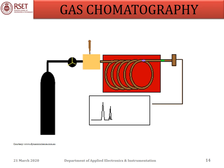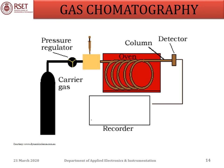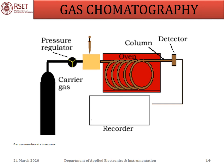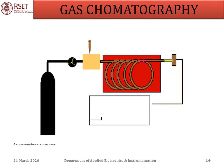Temperature T2 determines the time for passage of the solute and the resolution and efficiency of the column. At the end of the column, a detector is placed which produces an electrical signal corresponding to the quantity of solute leaving the column. The detector signal can be directly applied to a recorder, producing a chromatogram, or the signal can be applied to the microprocessor for further processing.